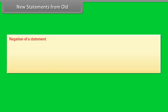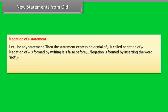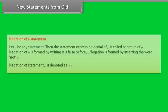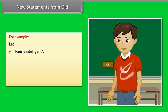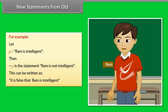New statements from old. Negation of a statement: let P be any statement. The statement expressing denial of P is called the negation of P. Negation is formed by writing 'It is false that' before P, or by inserting 'not' in P. The negation of P is denoted as 'not P'. For example, let P be 'Ram is intelligent.' Then not P is 'Ram is not intelligent' or 'It is false that Ram is intelligent.'